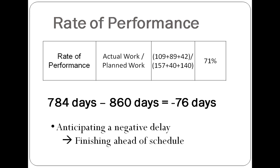If this rate of performance is multiplied by the planned duration, the estimated project end can be obtained, which is likely to be even less than planned since the rate is less than 100%. Therefore, a negative delay is anticipated. A different way of looking at performance is to subtract the initial entire project duration from the updated duration, which is 784 minus 860, or 76 days ahead of our planned schedule.